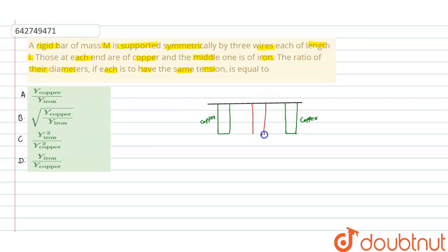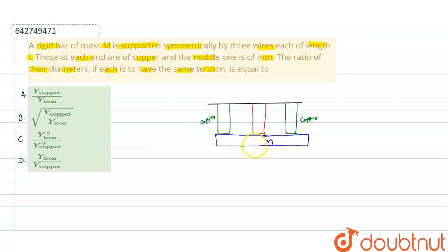The middle wire is made of iron. They are all connected symmetrically to a rigid bar of mass capital M. Since this is symmetrically connected, the extension in all these wires will be equal. The tension in these wires is also given to be equal.